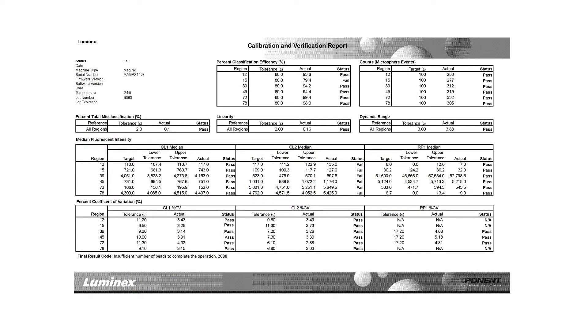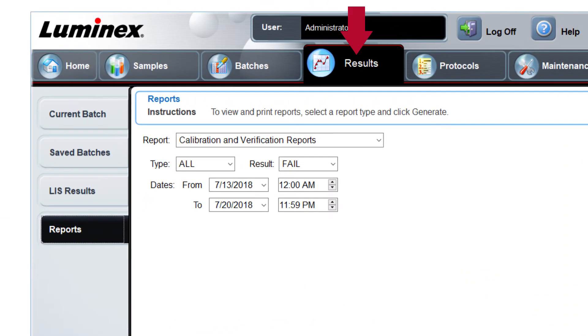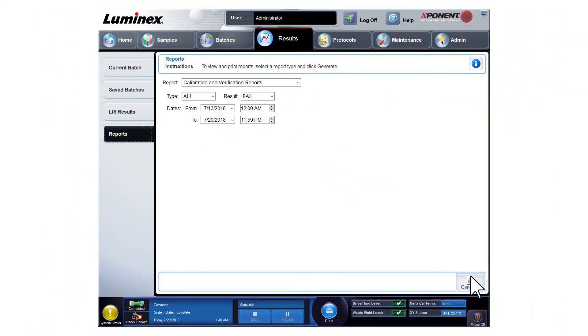When experiencing a calibration and performance verification failure on the MAGPIX instrument, first review the calibration and performance verification report to identify the failure. You can find the report by going to the results page Reports tab. In the Reports drop-down menu, choose the Calibration and Performance Verification report. Choose Fail from the drop-down menu to view only failed reports. Ensure the date of the failure falls within the date range selection. Click Generate.